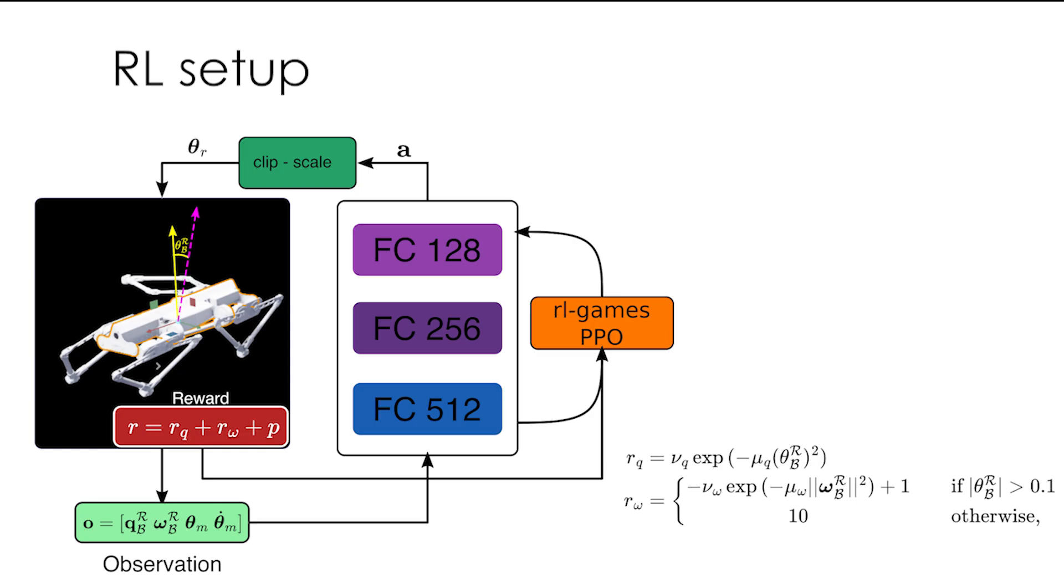To control the robot for orientation, a control policy is identified through reinforcement learning by applying the PPO algorithm. The reward function is designed to optimize torso orientation by incentivizing proximity to target orientation. A reward is also given for the angular velocity of the torso, and maintaining orientation within a target threshold results in a high reward.